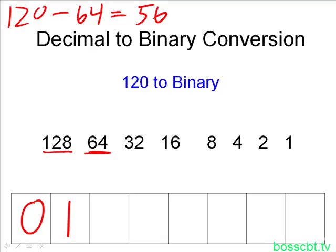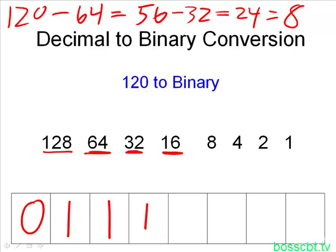That gives us 56. And then we keep repeating this process until we get 56 down to 0. We've already gone through the first two bit positions on the left, so we continue where we left off. Will 32 fit into 56? The answer is yes, so we write a 1 there and subtract 32 from 56 to give us 24. Carrying on, will 16 fit into 24? The answer is yes. We write a 1, subtract 16 from 24, and we know that's 8. And then will 8 fit into 8? The answer is yes, and we write down a 1. Now we're done, because when you subtract 8 from 8, you've got 0, so you have no more number to work with.